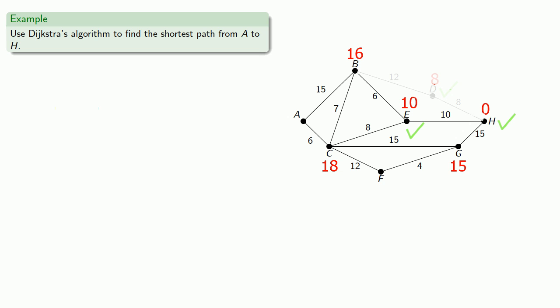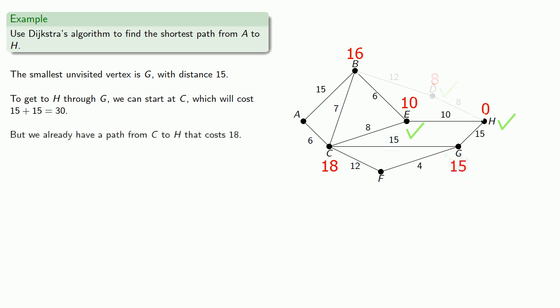So again, we're trying to find the shortest route to H. The smallest unvisited vertex is G with distance 15. Now to get to H through G, we can start at C, which will cost us 15 plus 15 or 30. But notice that we've already found a path from C to H that has cost 18. So we don't need this alternate route, and we can ignore the edge between G and C.